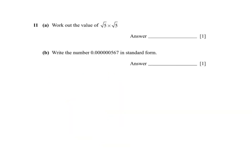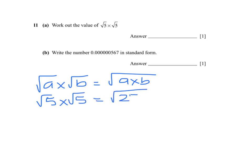For surds, the rule that we learnt is that the square root of A times the square root of B is the square root of A times B. So if I have the square root of 5 times the square root of 5, that is the square root of 5 times 5, which is 25. And the square root of 25 is 5.